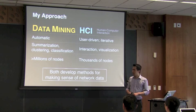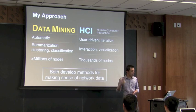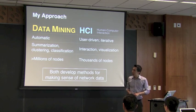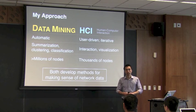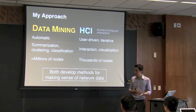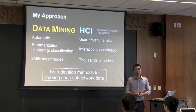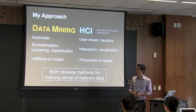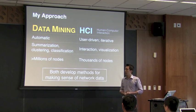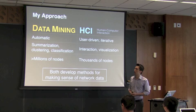These two domains have long been developing methods to help people make sense of network data, but their approaches are very different. On the data mining side, methods are more automatic — such as summarization, clustering, and classification — and are generally more scalable. On the HCI side, methods are more user-driven and iterative, considering the user's tasks and goals, with examples like visualization and interaction techniques, though they are generally less scalable.